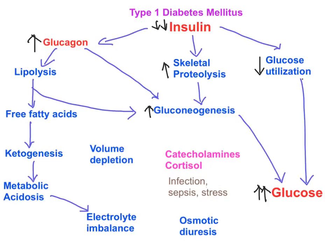The elevated blood glucose causing hyperglycemia also has osmotic effects, giving rise to osmotic diuresis. This osmotic diuresis leads to volume depletion in type 1 diabetes mellitus patients progressing into diabetic ketoacidosis. Osmotic diuresis also contributes to electrolyte imbalance in these patients.